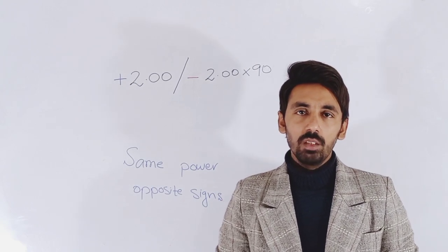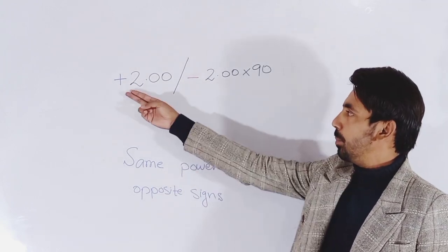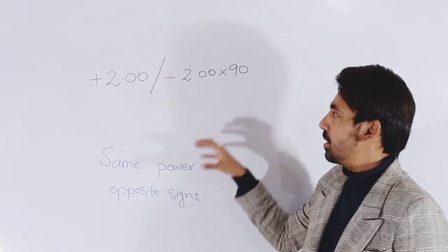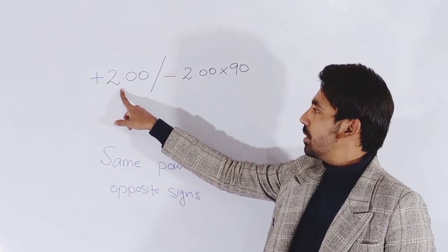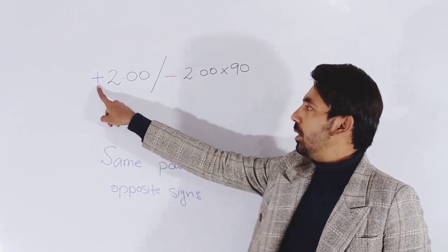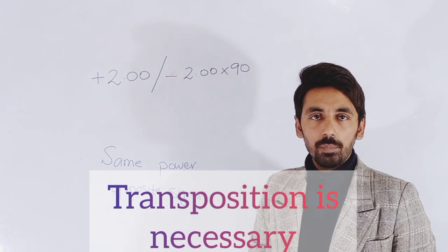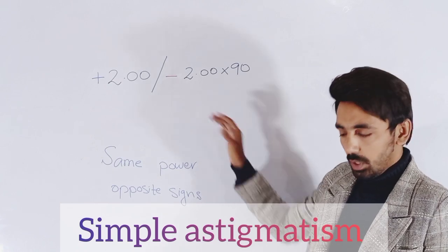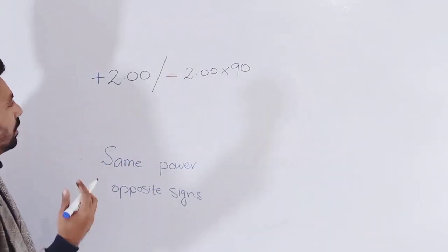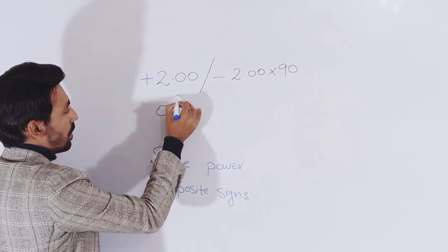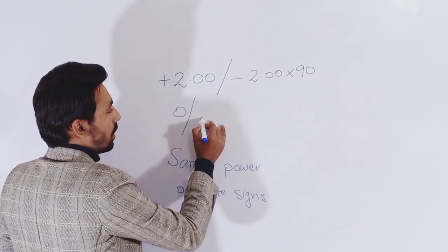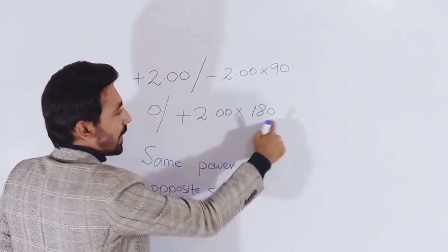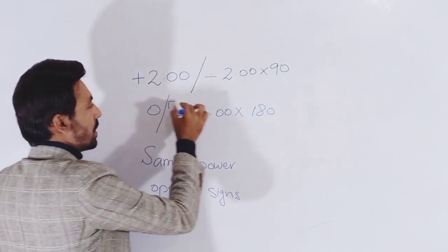Now we will verify the astigmatic prescription. We have a toric prescription here with plus two sphere and minus one cylinder. If you find any prescription which has the same power of sphere and cylinder but with opposite signs, then we have to transpose it. This prescription is called simple astigmatism. After transposition, the spherical would be zero, the cylinder would be with a plus sign, and the axis 90 degrees apart.